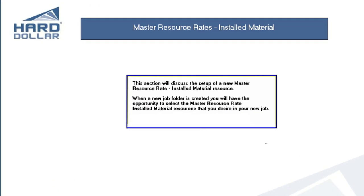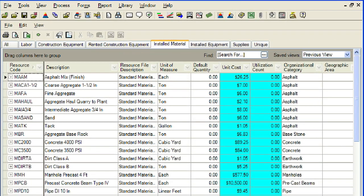This section will demonstrate how to create an installed material master resource in the library. When new job folders are created, you will have the ability to specify the master resource rates that you want to have copied into the new job. The master resource rate register installed material form is used to create or modify the rate charged for the installation of an individual material resource of a certain class. Each resource represents a single class of installed material, for example 2500 PSI concrete, and consists of a code, description, and a set of rate elements that together value the rate, for example $100 per cubic yard.